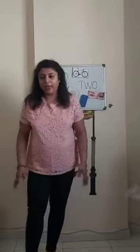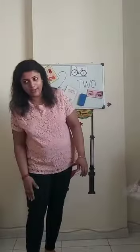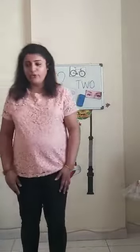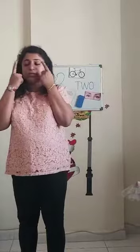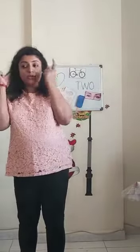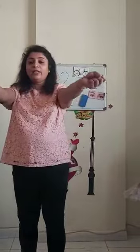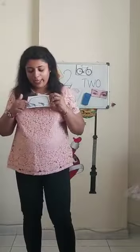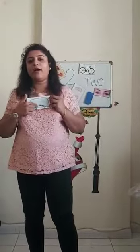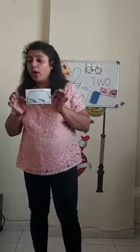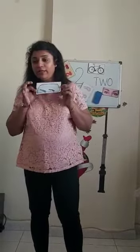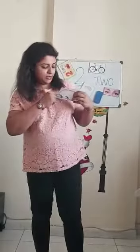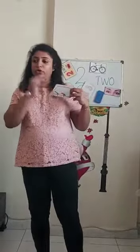How many legs do you have? 1, 2. So you have 2 eyes, 2 ears, 2 eyebrows, 2 hands. Now tell me, what is this? The wipers on the car. We have 2 wipers also in the car, right? 1, 2.